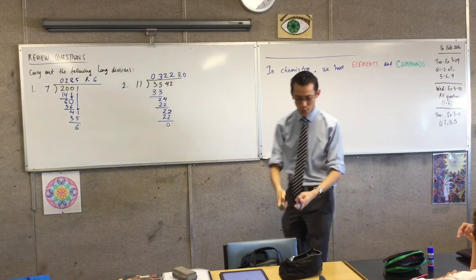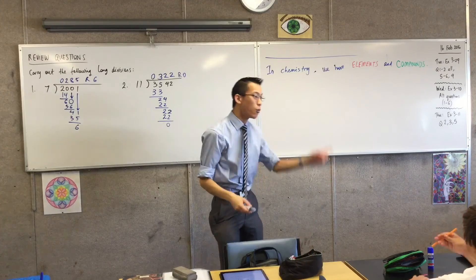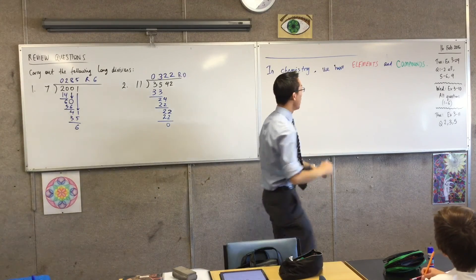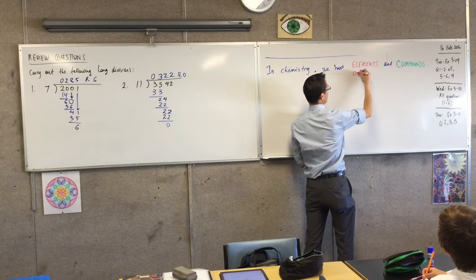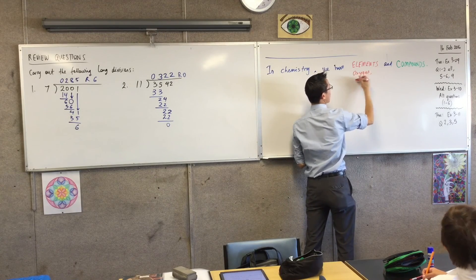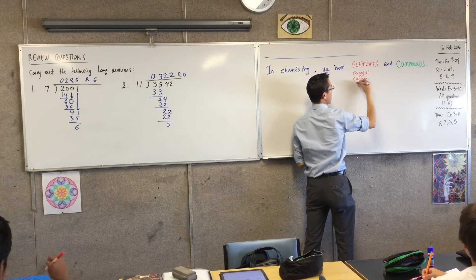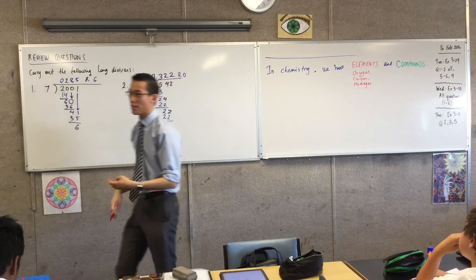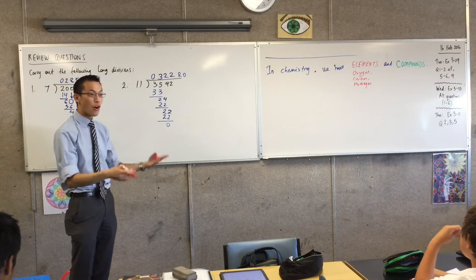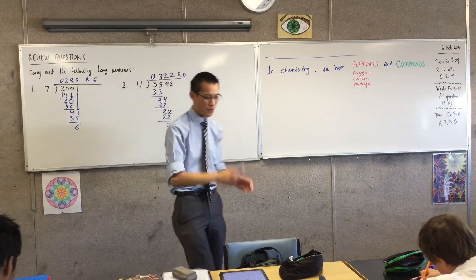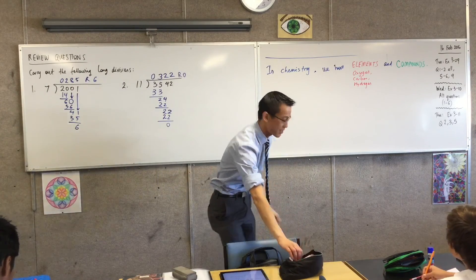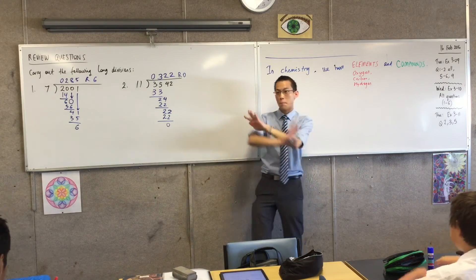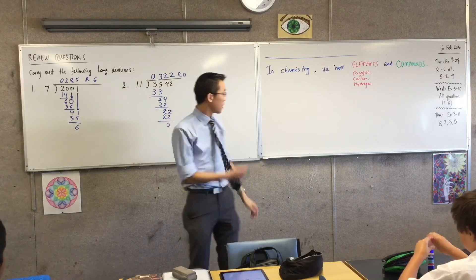Now if you have not met these words before that's fine. I think you know what all of these actually are. You know a whole bunch of examples. So elements are things like oxygen or carbon or hydrogen. These are things that we call elements. They're all on the periodic table. Everything on the periodic table is one of these.